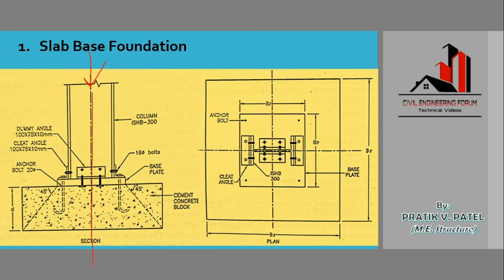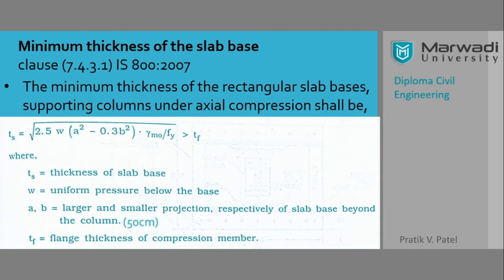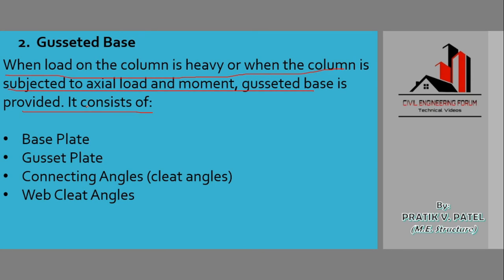Sometimes it may happen that there is some moment created if the load is not symmetric. Even if it is symmetric, there might be very heavy loading which may deflect the column, and the base plate is not able to support the loading. So slab based foundation might not be enough to handle this, and in this case we use gazetted base foundation. It consists of a base plate, a gazette plate, connecting angles, and a web cleat angle.